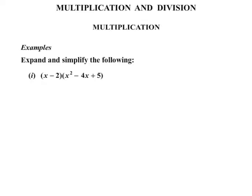The first one: x minus 2 times x squared minus 4x plus 5. Starting with the first term in the first bracket, the x is going to multiply by each of the terms in the next bracket. So x times x squared is x cubed, x times minus 4x is minus 4x squared, and then x times 5 is plus 5x. So we've done that x in the first bracket.